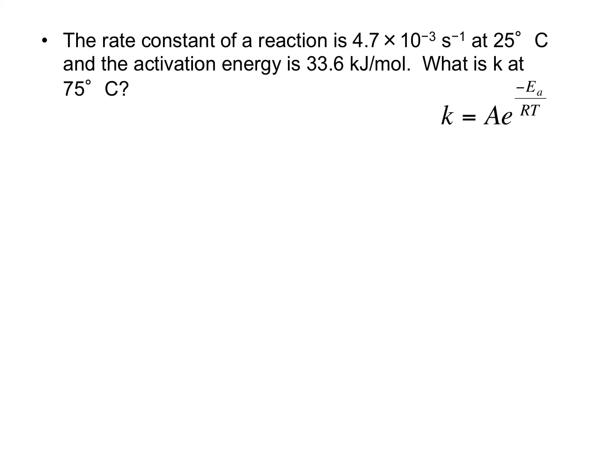Okay, this is the second example problem involving the Arrhenius equation. In this case we're told that the rate constant is 4.7 times 10 to the minus 3 inverse seconds at 25 degrees Celsius, and they give us the activation energy. They want to know what is the rate constant at 75 degrees Celsius.